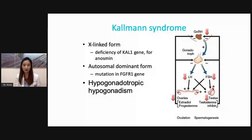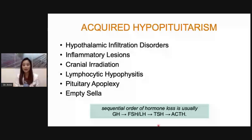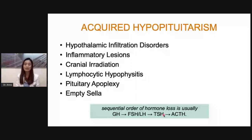Next, let's discuss acquired hypopituitarism. The sequential order of hormone loss starts with growth hormone, followed by FSH, LH, TSH, and ACTH. So if a patient already has adrenal insufficiency — meaning ACTH is already deficient — most likely they will also have hypothyroidism, hypogonadism, and growth hormone deficiency. This is not a hard-and-fast rule, but a guide to check all the other hormones as well.